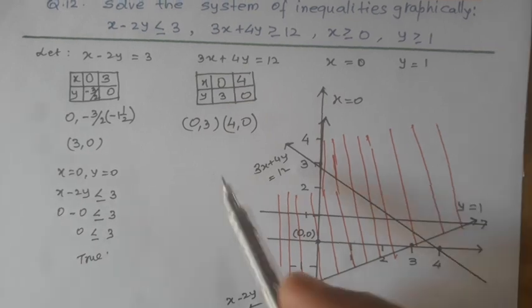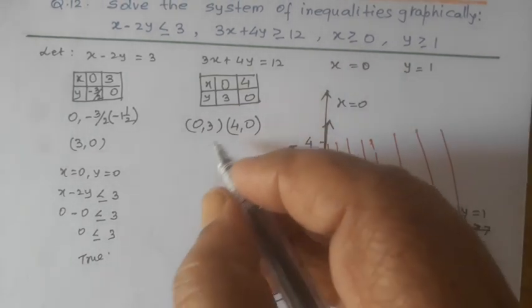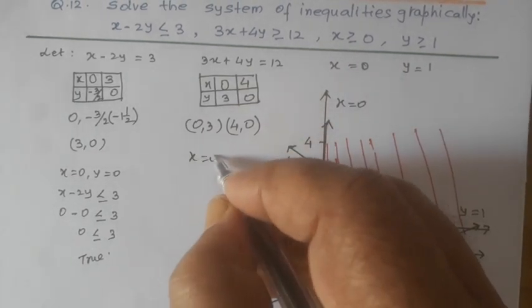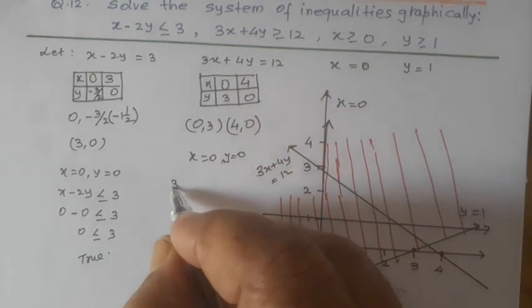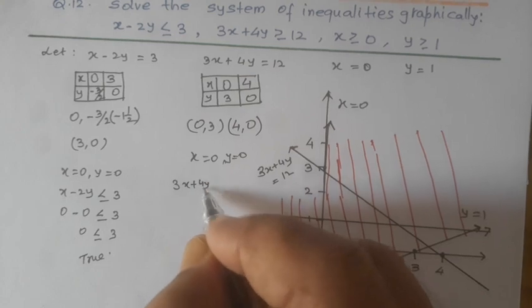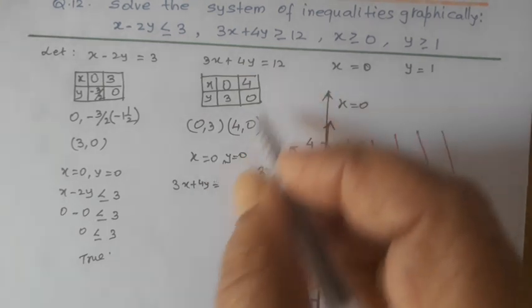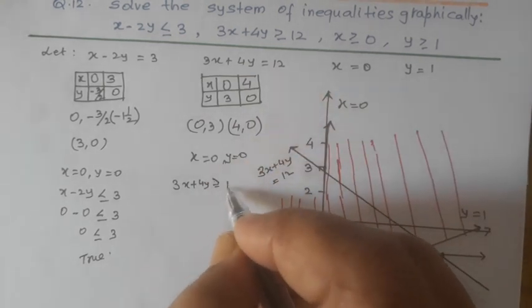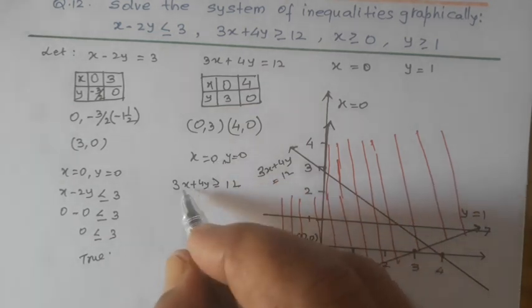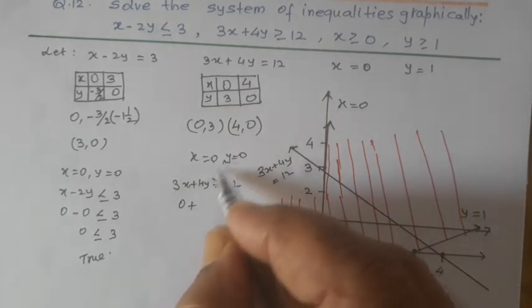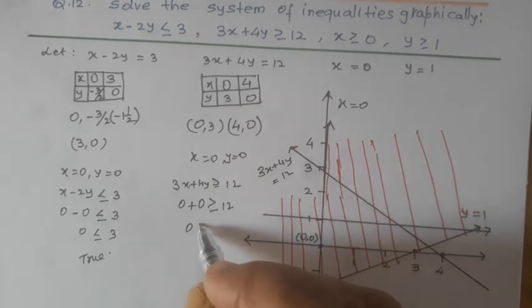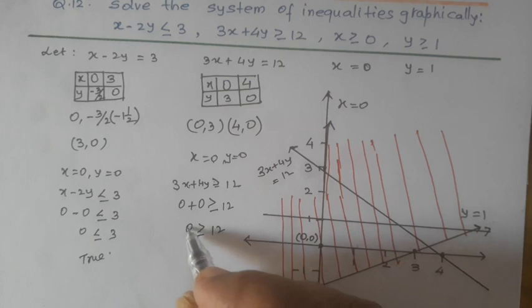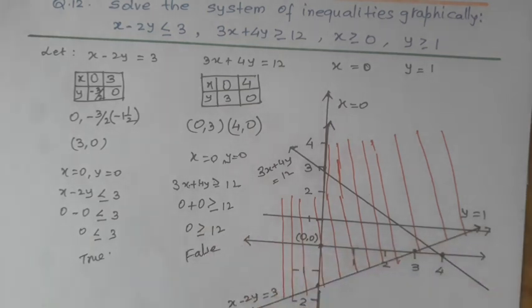For the second inequality, x equal to 0, y equal to 0. Put these values in the inequality 3x plus 4y greater than equal to 12. So, 3 into 0 is 0, plus 4 into 0 will be 0, greater than equal to 12. 0 is not greater than 12, so it is false.